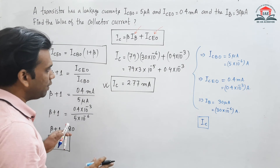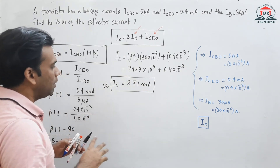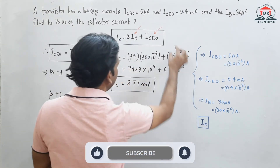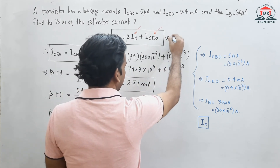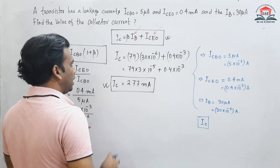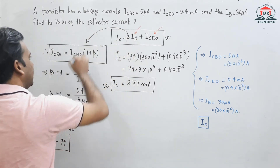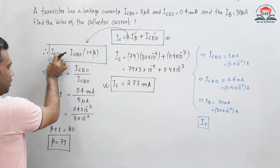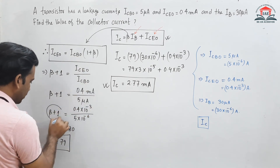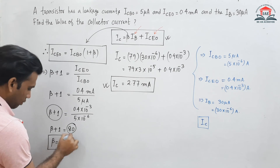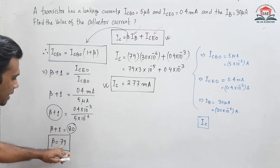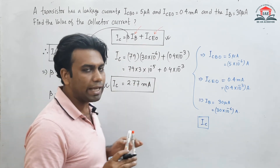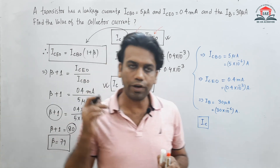To summarize the algorithm: first, write the IC equation as IC equals beta × IB plus ICEO. Then, since beta is unknown, use the relation ICEO equals ICBO × (1 + beta) to find beta plus one equals 80, so beta equals 79. Substituting back gives the collector current value of 2.77 milliampere.